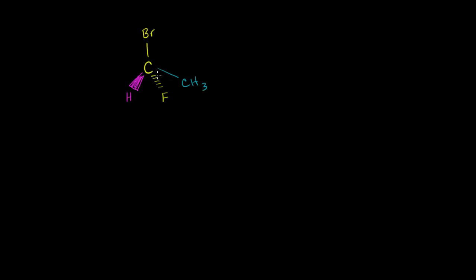And then we have on the one-carbon — we could call this the one-carbon and call this the two-carbon — we have a bromine and a fluorine. So we could call this one-bromo, and we're putting the bromo instead of the fluoro because B comes before F alphabetically. One-bromo, one-fluoro, and then we're dealing with an ethane.